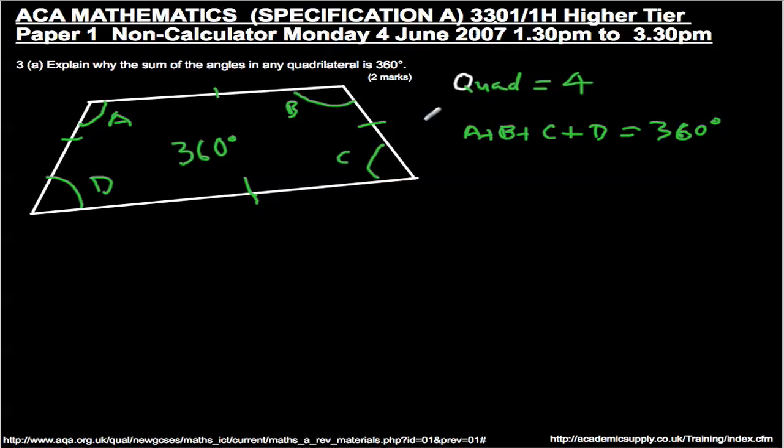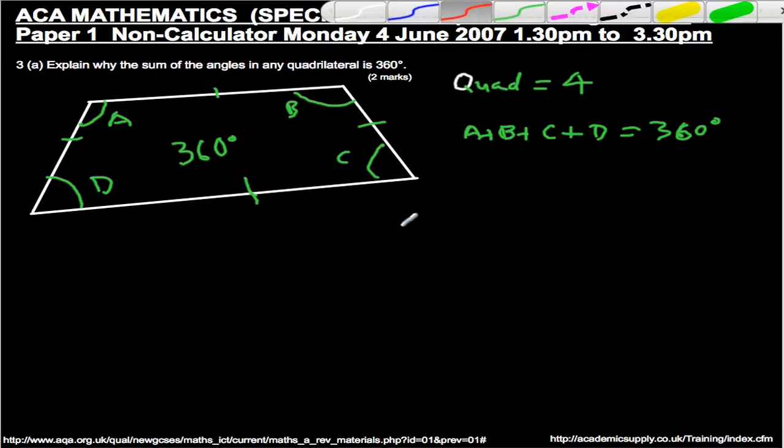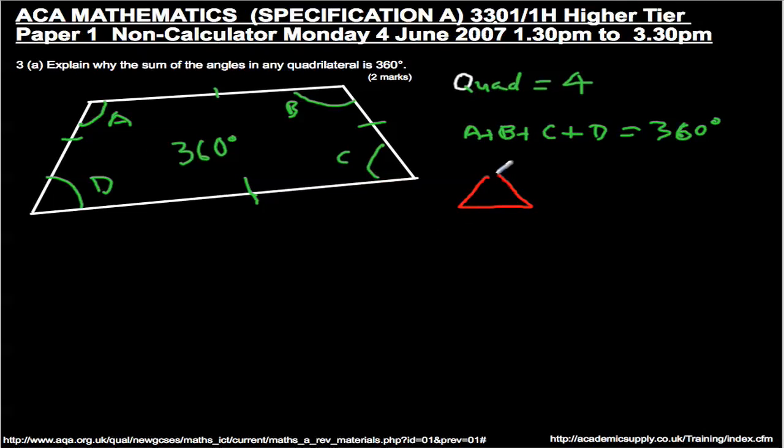Now, explain why this is so. Let's have a quick think. Let's think about a triangle. A triangle, tri being 3, so it's got 3 sides and 3 angles. We know that is equal to 180 degrees. Could we use this fact to help us solve this? Well actually, any quadrilateral can actually be split into two triangles.